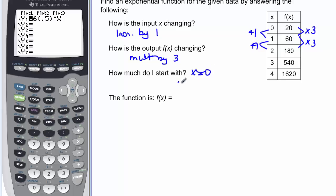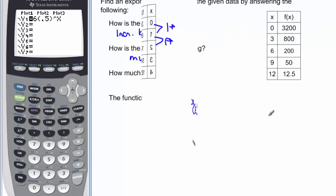How much should we start with? Remember, that's when x equals 0, and when x equals 0 we started with 20. So that means that my 20 is my a, and the 3 is my b. As long as x is increasing by 1, I should just be able to write this function as f of x is equal to a, which is 20, times b, which is 3, to the x.